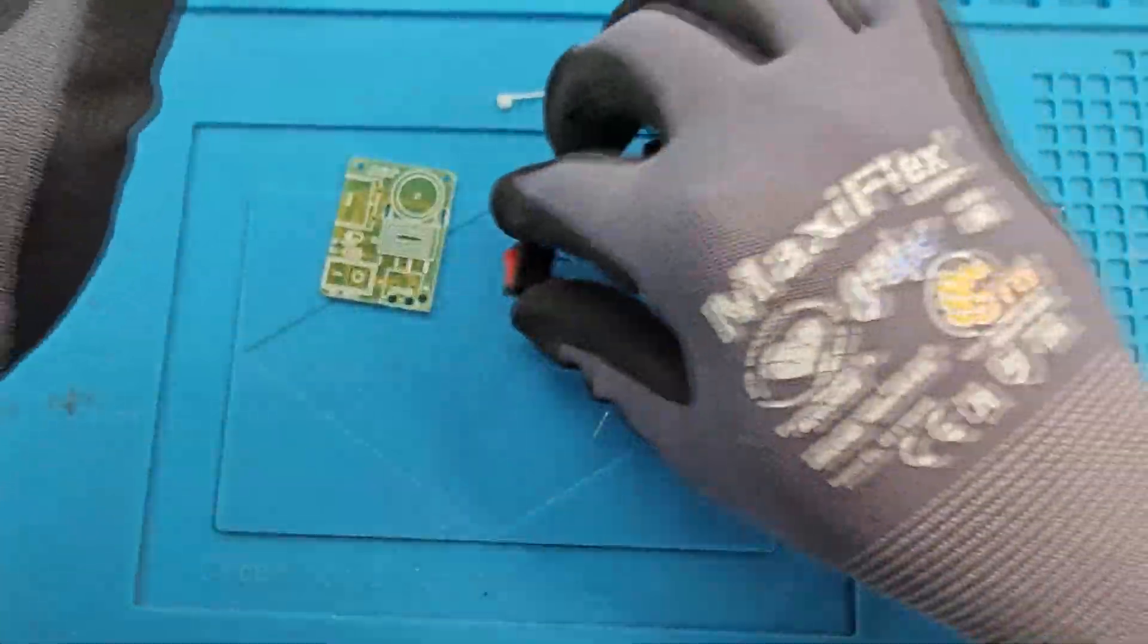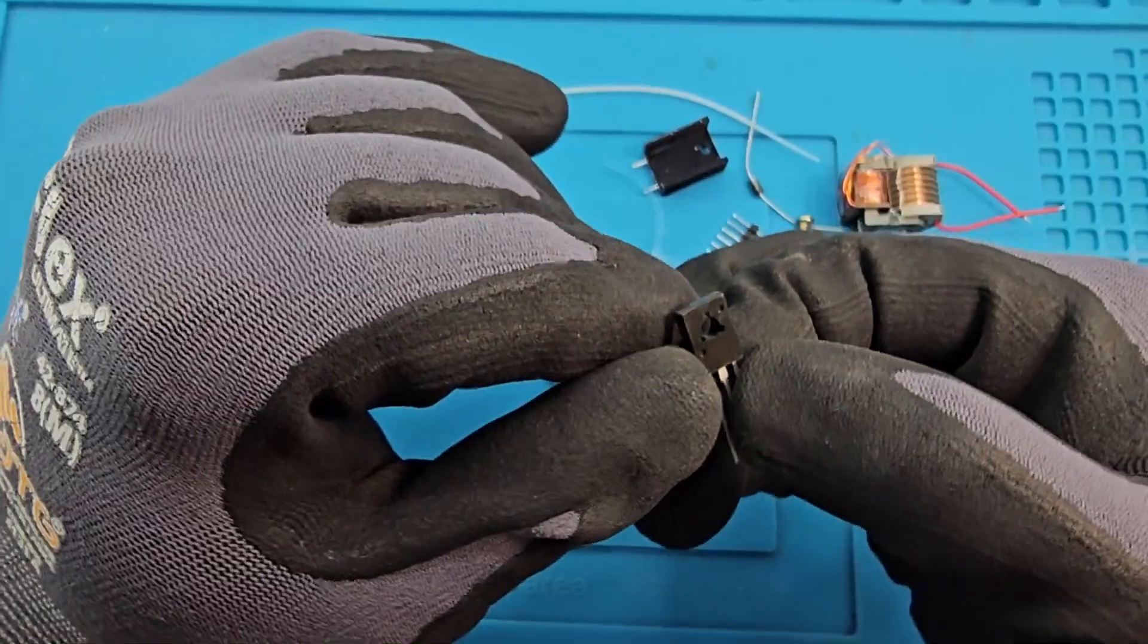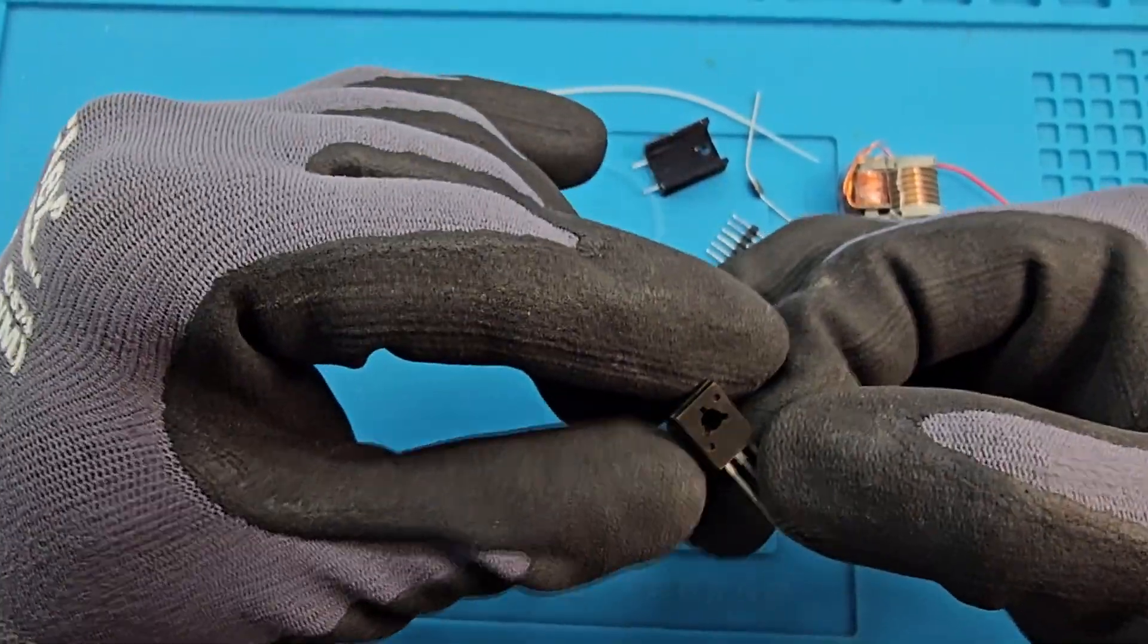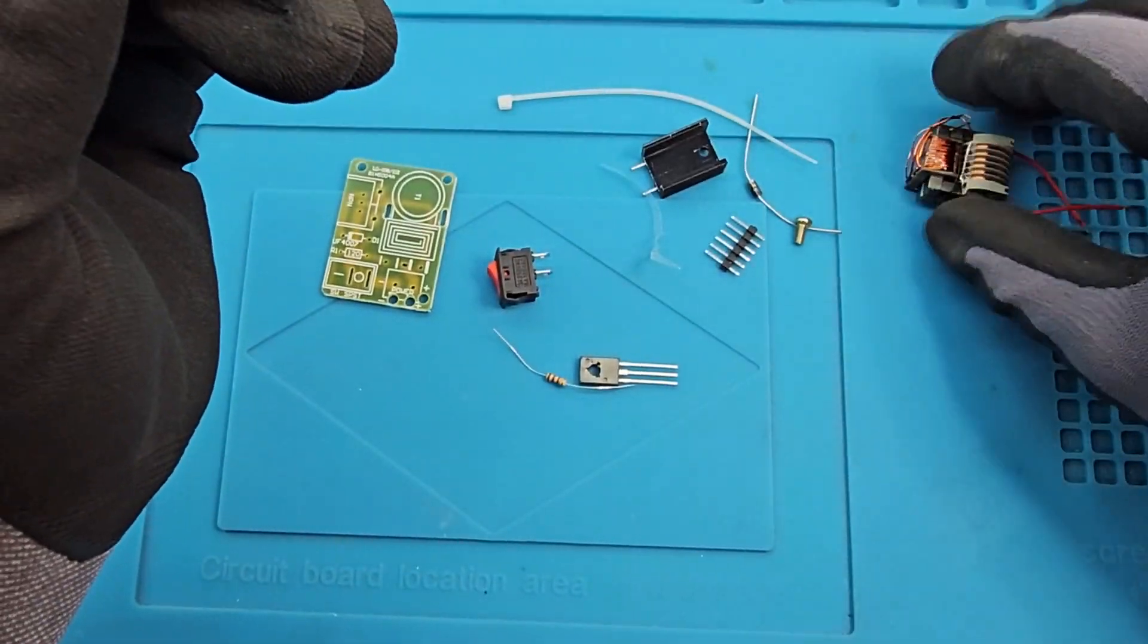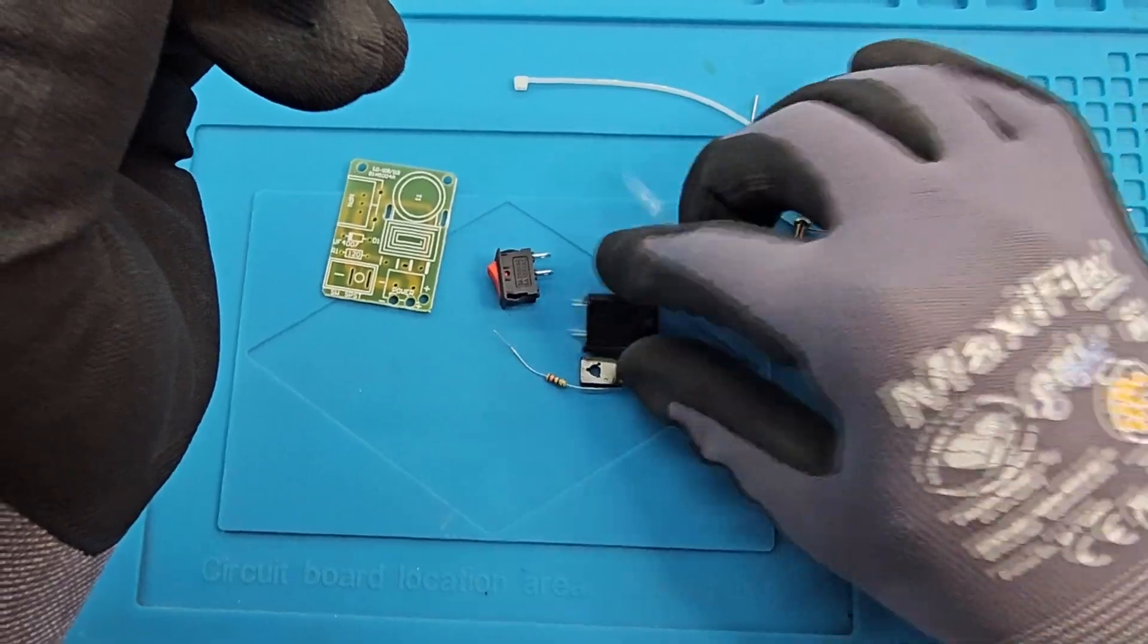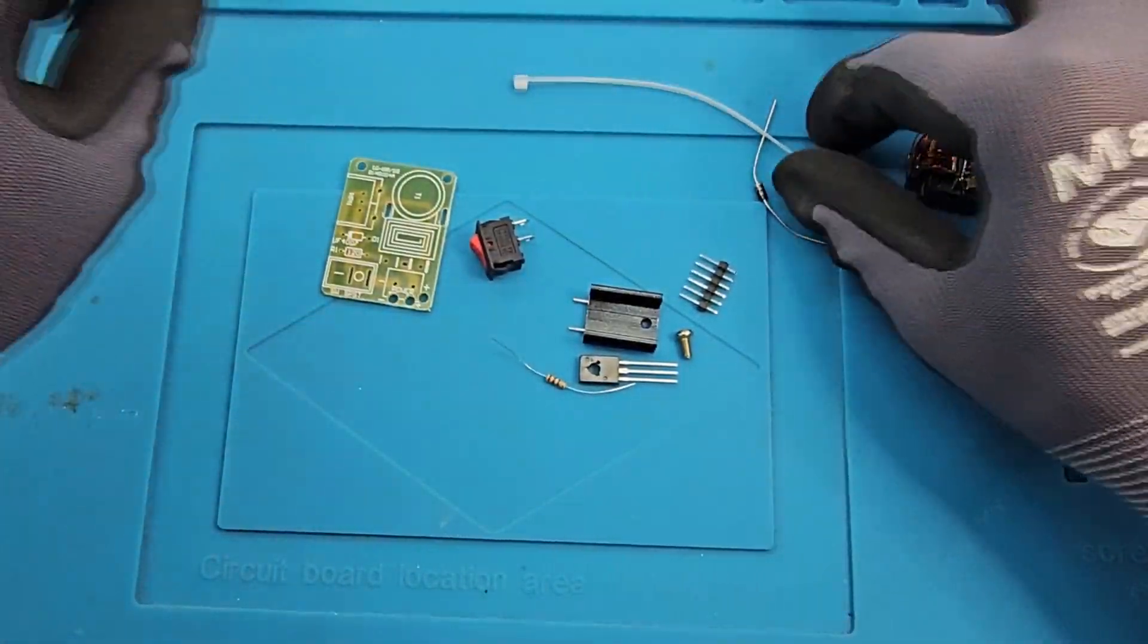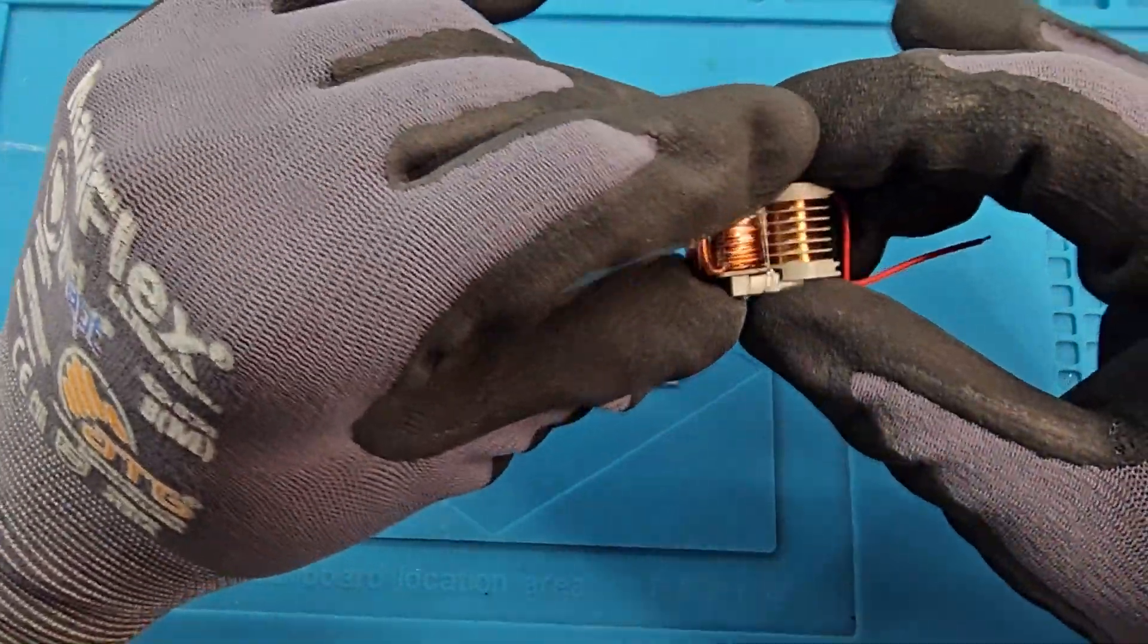There's a switch, a simple resistor, a transistor which reads nothing—there's nothing on the transistor so it's probably the cheapest transistor out there—the heat sink, and a screw for the heat sink to hold this transformer.